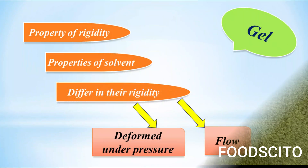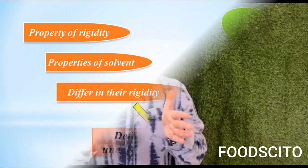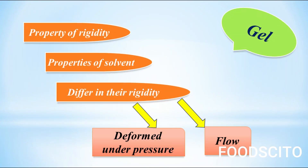A gel is a remarkable phenomenon displaying the property of rigidity, sometimes at quite low concentrations of solute, and yet often showing the properties of solvent remarkably unchanged. For example, most gels in water show vapor pressure and electrical conductivity very close to water. The phenomena displayed by gels are complex; gels differ considerably in their rigidity.